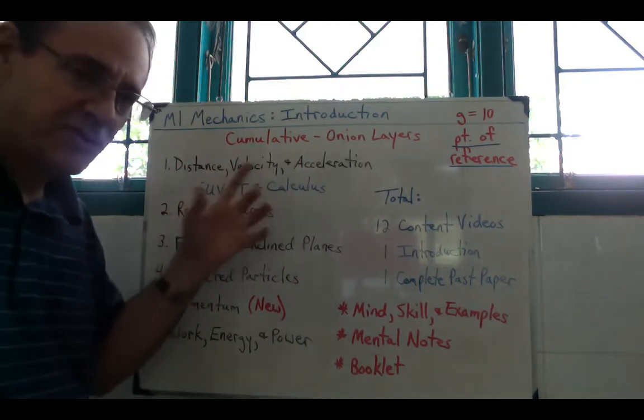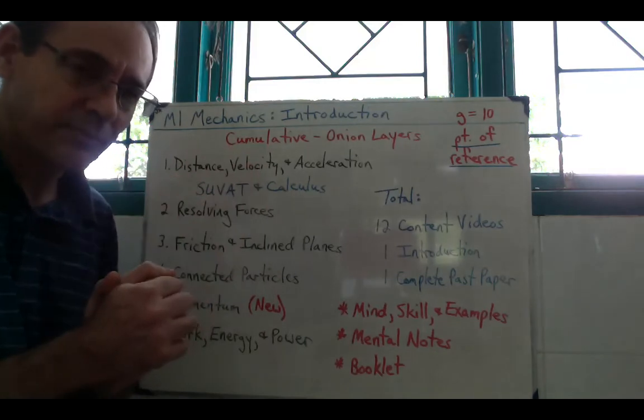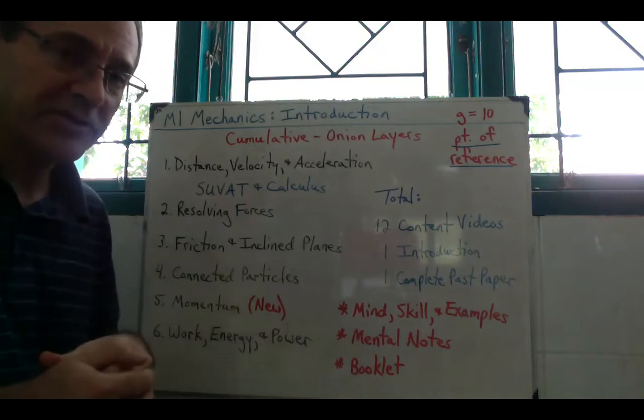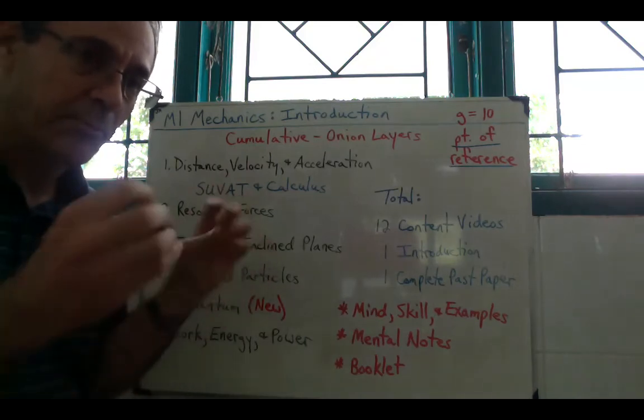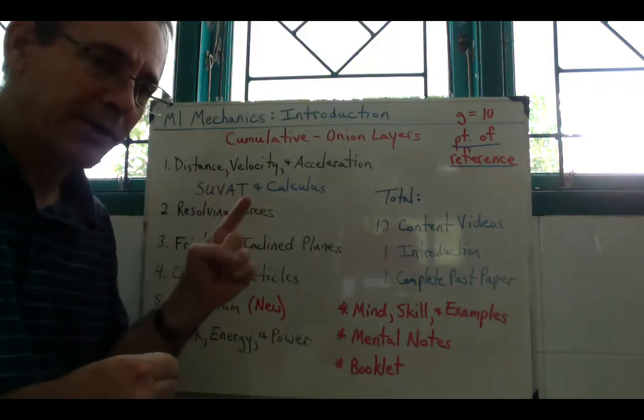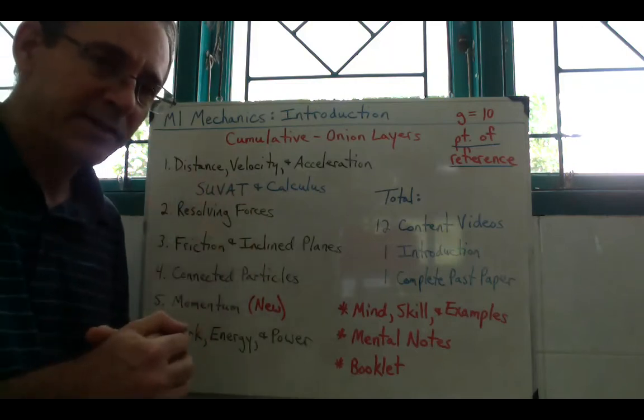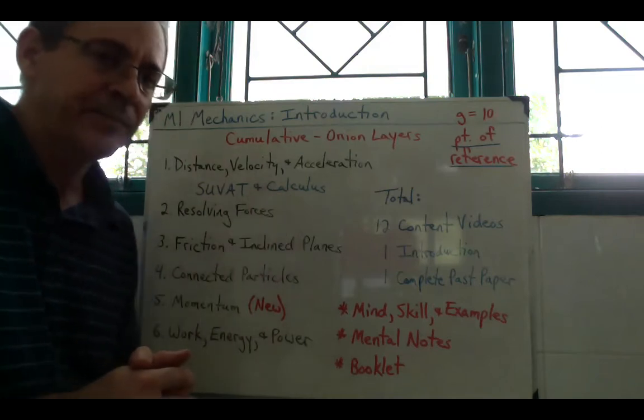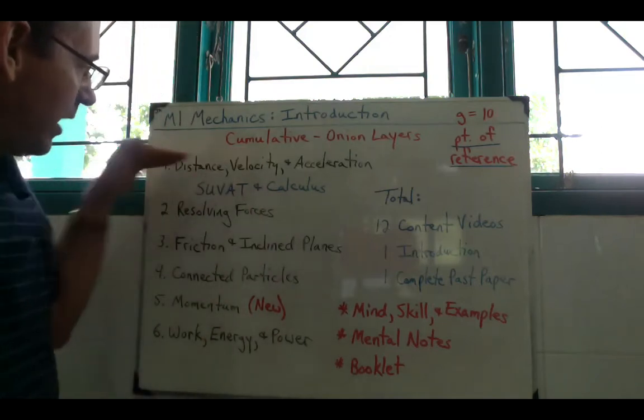I want them to get used to both of those questions side by side, and Cambridge sometimes has a question where both are included in the same question. One particle is following a SUVAT formula and the other particle is following a calculus formula. So I put those together in one unit.